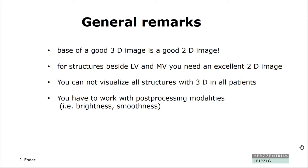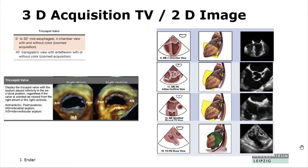You have to have really excellent image quality, and you have to admit that you cannot see every structure in every patient. Don't waste too much time if it's not for a clinical purpose. All of these structures have some clinical purpose, but not much. One of them is the tricuspid valve — for the new procedures with clipping and all that, tricuspid visualization is key for all transcatheter procedures.